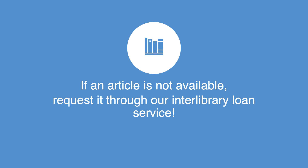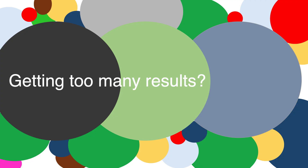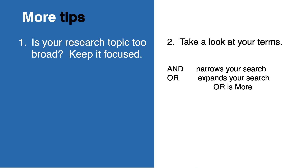Sometimes students are overwhelmed by the number of results they retrieve from a search. If that happens, try to take a second look at your research question or topic. Is it too broad? If so, try to focus your question. Always try to take a close look at your search terms. Remember, AND terms narrow or focus your search. The more AND terms used, the fewer results you should retrieve. On the flip side, OR terms expand your search — OR is more.